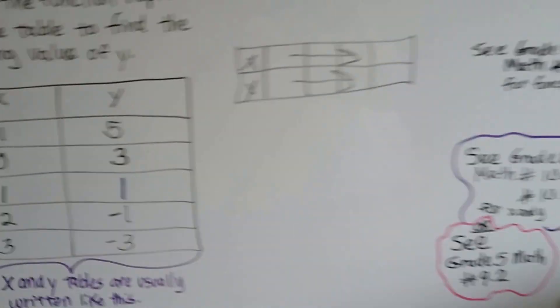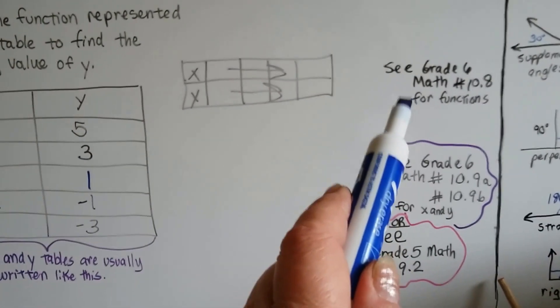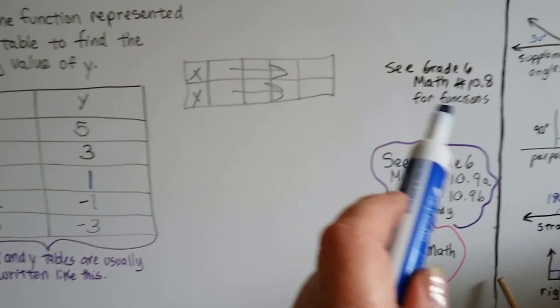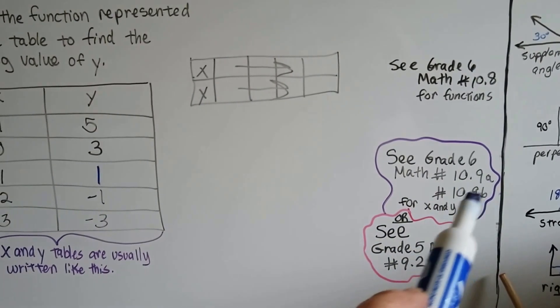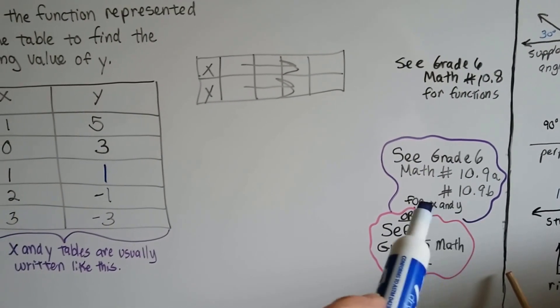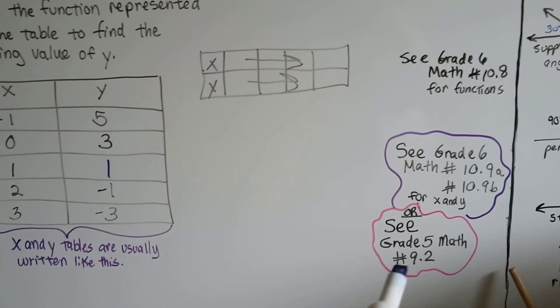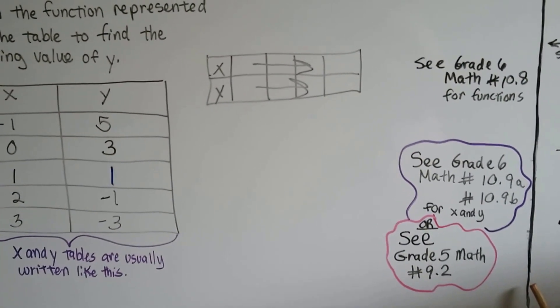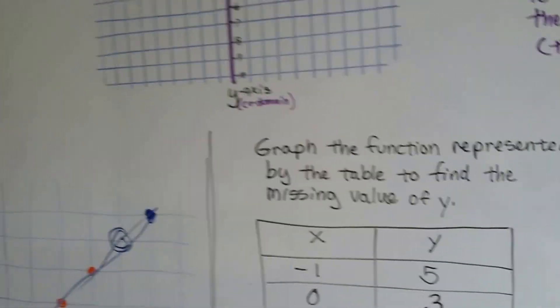If you still have questions, and you haven't been watching every single video, go back to the grade 6 math number 10.8, and it'll explain functions. You can watch the grade 6 math 10.9a and 10.9b for x and y coordinates on a coordinate plane. You can also watch grade 5 math number 9.2. That explains the coordinate plane in a little bit easier way because it's 5th grade math.